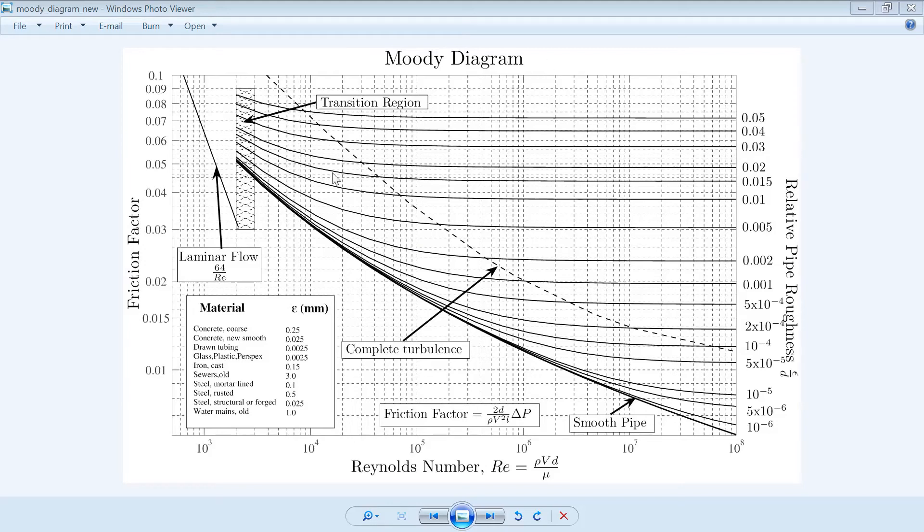The Moody diagram is used to calculate the friction factor when the flow is turbulent. When the Reynolds number is more than four thousand, we use this diagram. For example, let's say the Reynolds number is 10^5, or one hundred thousand.